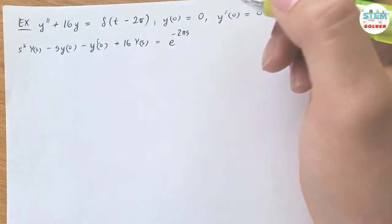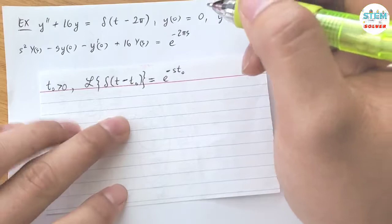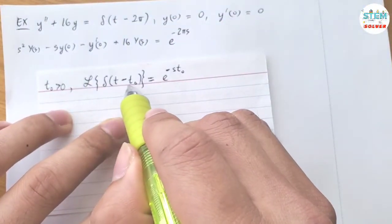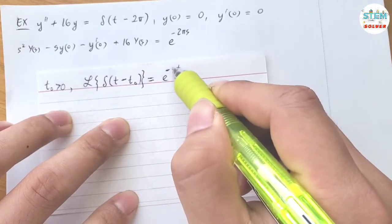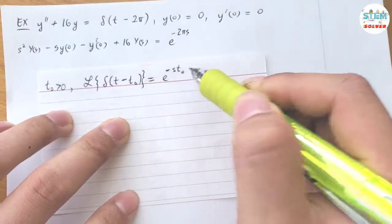I have it written down here, so L of delta(t - t₀) equals e to the negative s t₀, so this is the base and whatever t₀ that you just plug it in.